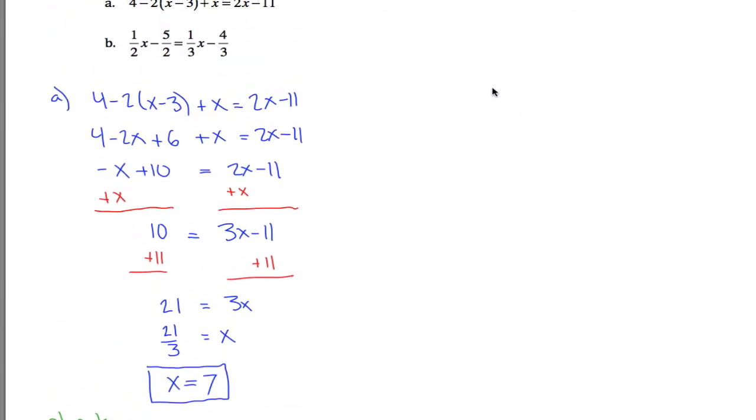Part B, we want to kind of repeat that. Part B, hopefully we'll get the same answer. Now, unfortunately, we'll have to deal with fractions. No parentheses or like terms to combine in this case, so we just kind of start by adding and subtracting things to both sides of the equation. Again, in order to keep my x's positive, I'm going to subtract 1 third x from both sides of the equation.